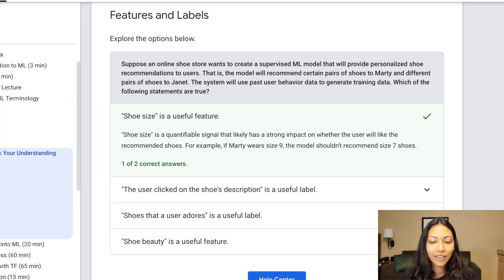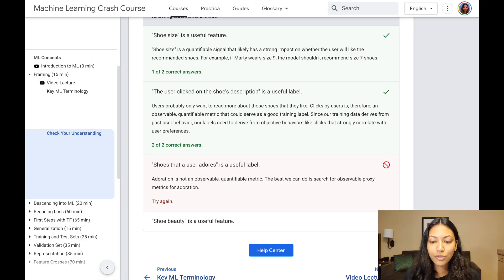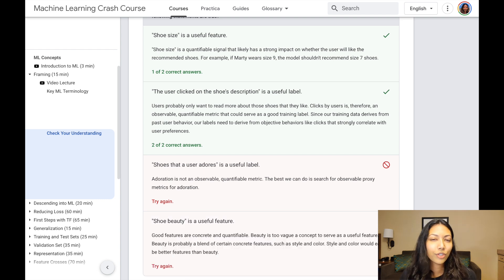A lot of you all agree that shoe size is definitely a useful feature and that's definitely true. What about the user clicked on the shoes description is a useful feature. That is also true. Users probably only want to read more about those shoes that they like. Clicks by user is therefore an observable quantifiable metric. So the keywords here are observable and quantifiable. So like these other features such as shoes that a user adores and shoe beauty, these features are not exactly quantifiable and easy to measure. So these features are actually really difficult to measure and it's probably not that useful of a label.